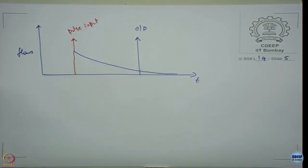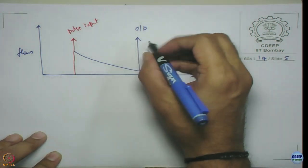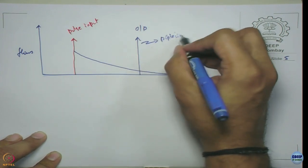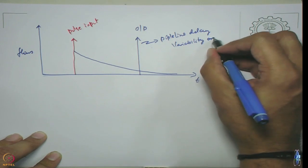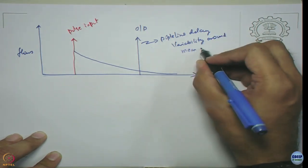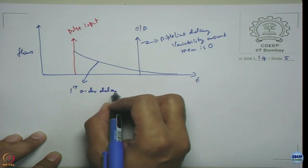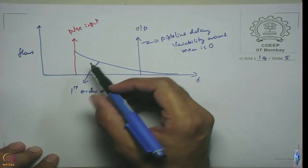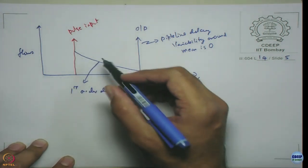If it is a first order exponential delay it is going to go like this. These represent two extremes of how the material delay is functioning. One where everything comes out at one particular point in time where the variability is zero. For the pipeline delay variability around mean is zero. First order delay there is a variability around the mean, very large variability.